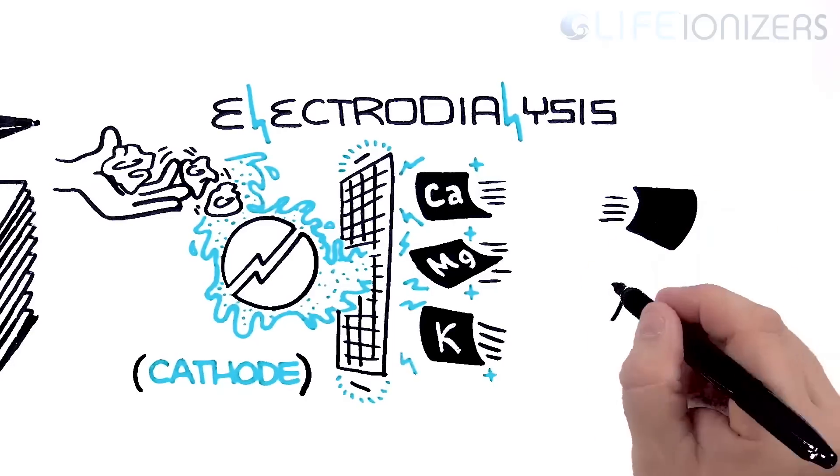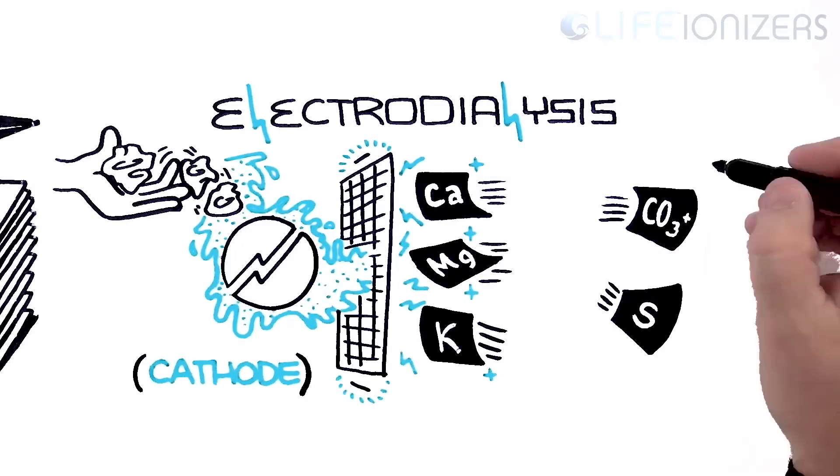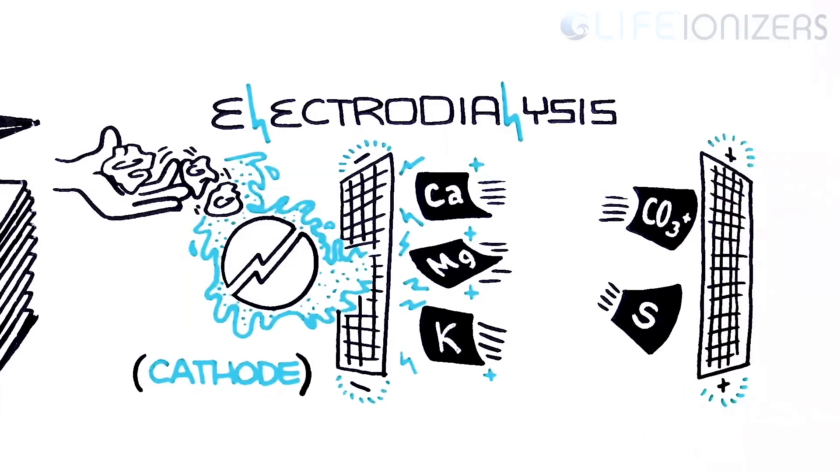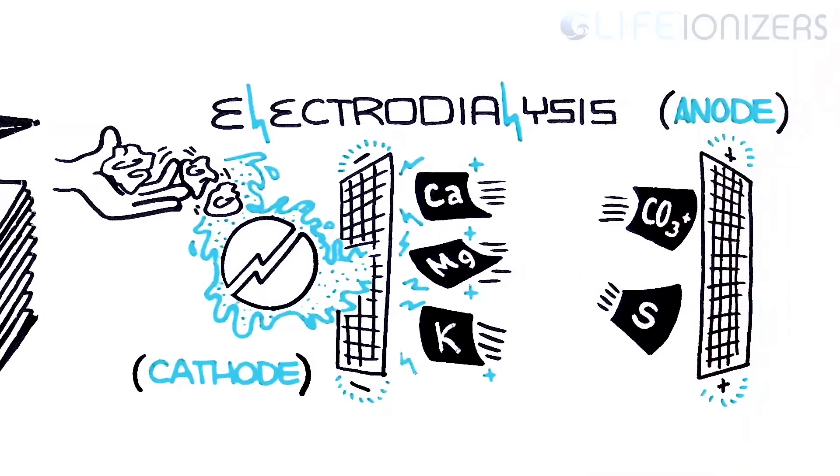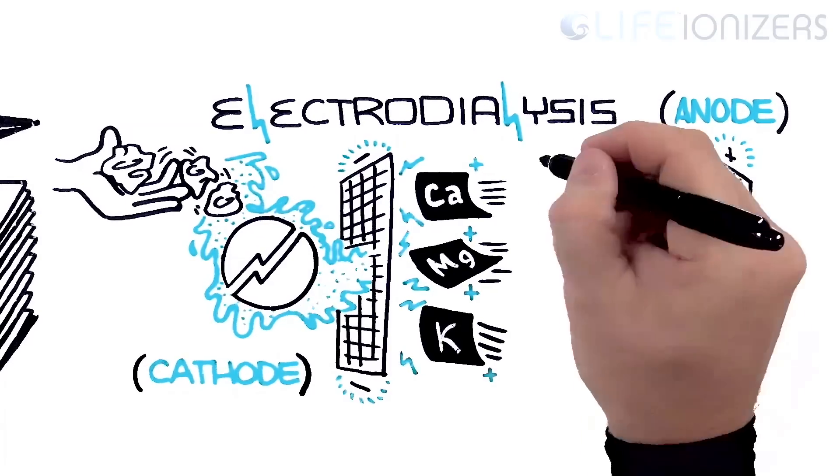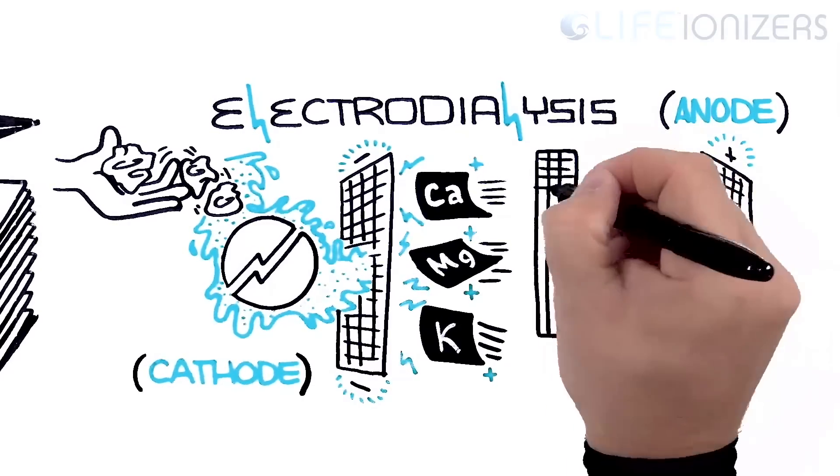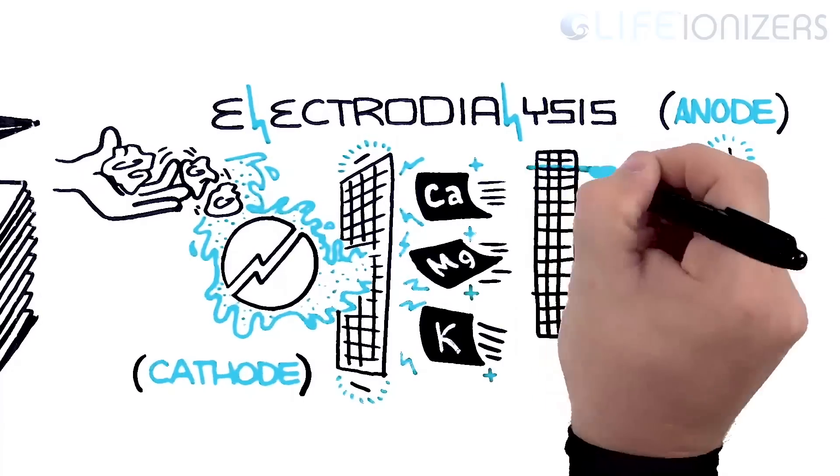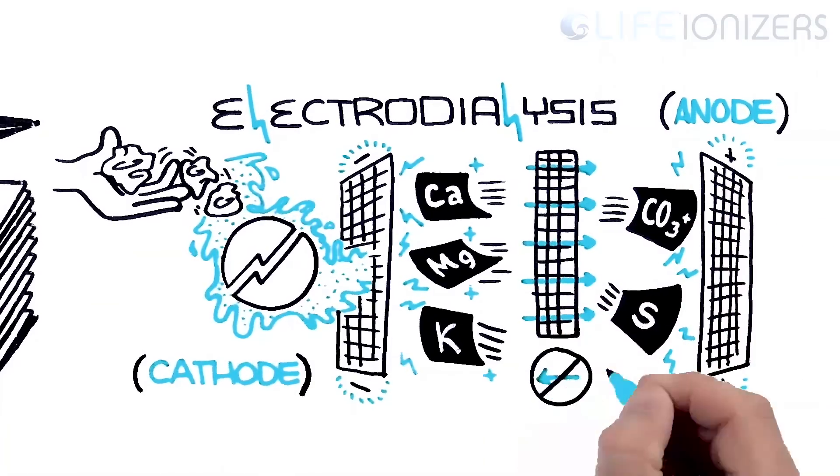Negatively charged ions, such as carbonate and sulfate, are drawn toward the positively charged plate, also known as the anode. Next, the separated ions pass through a membrane known as an ion-permeable membrane, which allows the ions to pass through but not cross back.